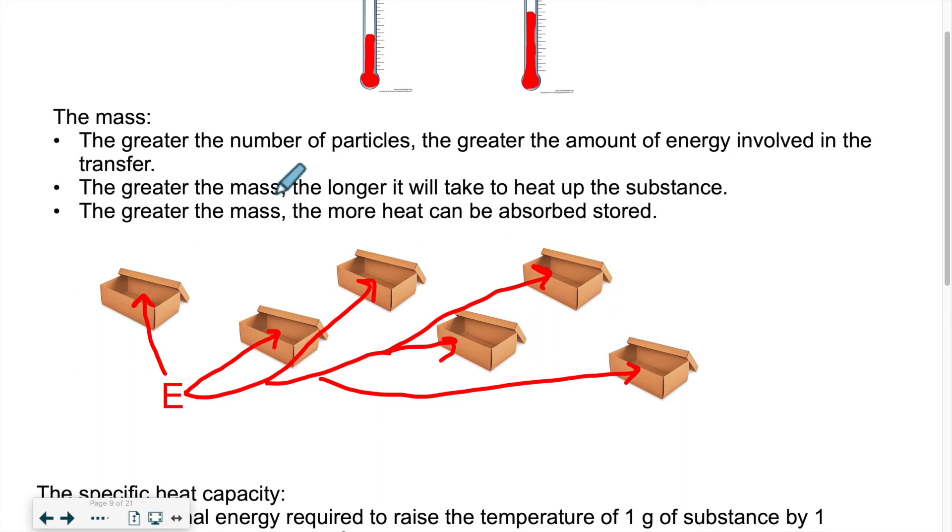The greater the mass, or in my example, the more boxes, the longer it'll take to heat up the substance. It's much longer to put energy in all these boxes. If I had less boxes, it will take less time to fill them all up. So the greater the mass, the longer it'll take to heat it up. And the greater the mass, the more heat can be absorbed or stored. So at the end of the experiment, once I'm done putting energy in all of these boxes, I have stored a lot of energy if I have a lot of boxes. So that's the way it works for the mass.